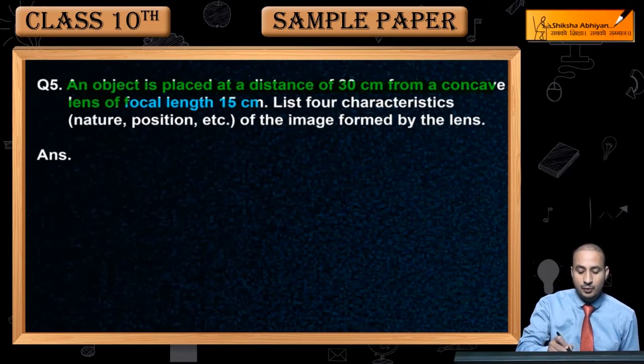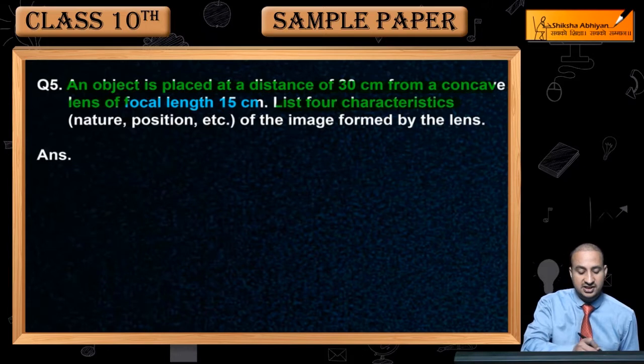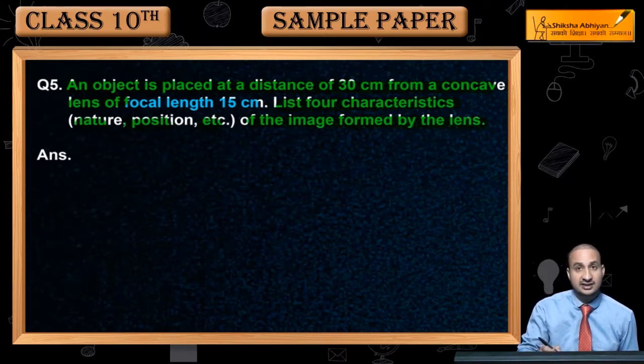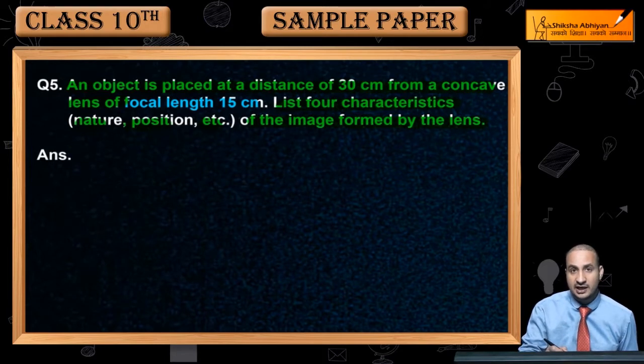You want to list four characteristics of the image formed by the lens. What is the characteristic of the image, what is the position?